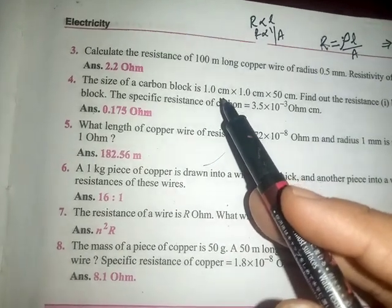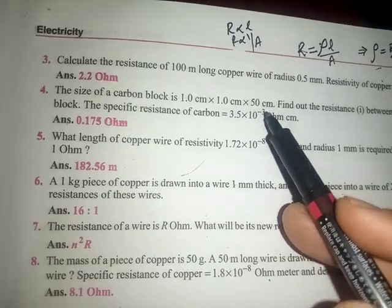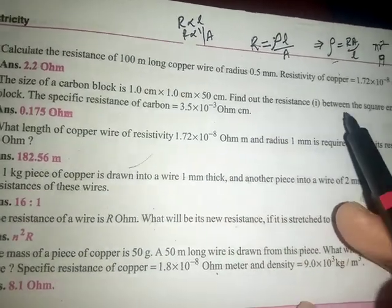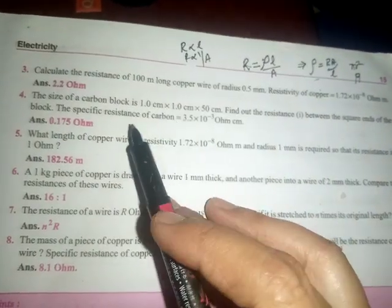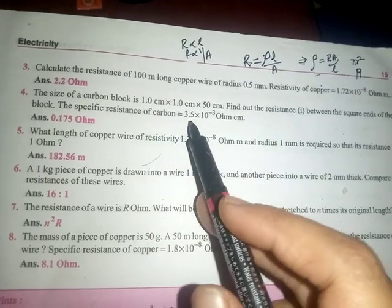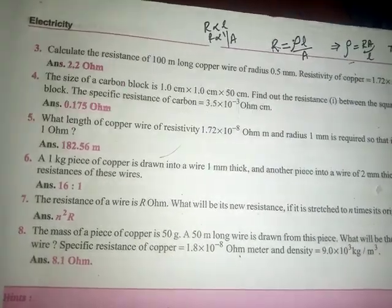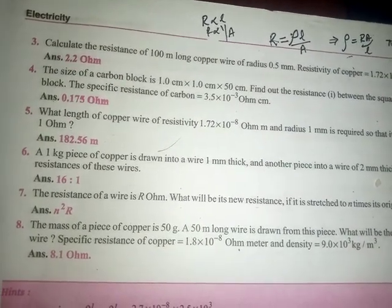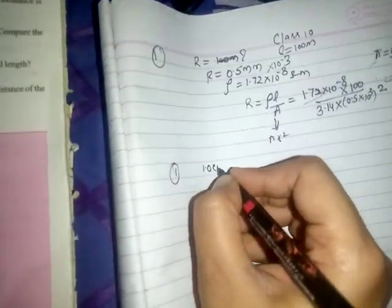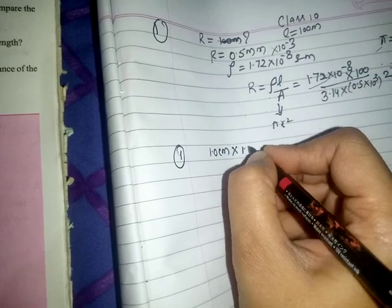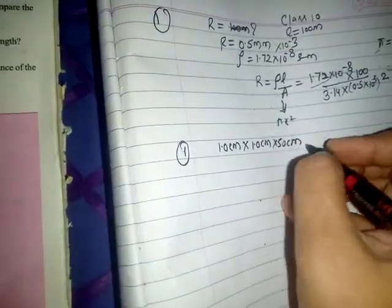Next numerical: the size of a carbon block is 1.0 cm × 1.0 cm × 50 cm. Find the resistance between the square ends of the block. The specific resistance of carbon is given as 3.5 into 10 to the power minus 3 ohm centimeter. Write this as Question Number 4; the size of the carbon block is 1.0 × 1.0 × 50 centimeter.